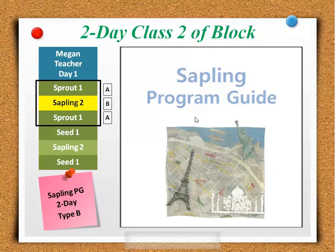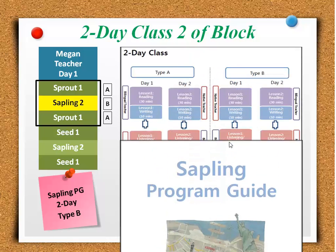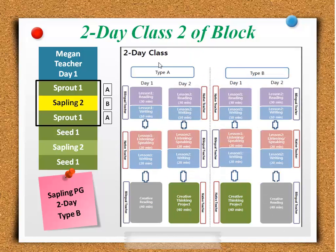Now that we have the Sapling Program Guide out, we need to find the 2-day Program Guide and look for Type B. Type B is on this side here.